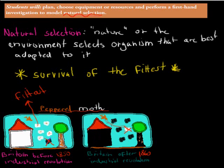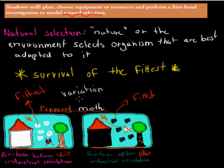But afterwards, once the environment changes, nature changes. Now the white ones die because they have no place to hide, and the black ones can camouflage on the buildings and trees. So now the black ones are the fittest. It's these small variations — and that word variations is important, meaning slight differences. All species have variation, just like no two human beings are the same. In this case, the only slight difference between these moths is the colour of their wings, but that might be enough for some to survive and some to die.